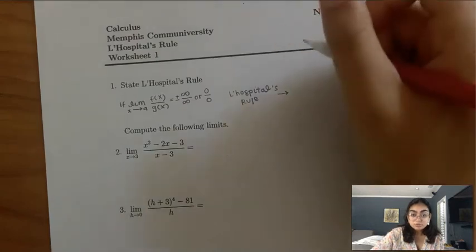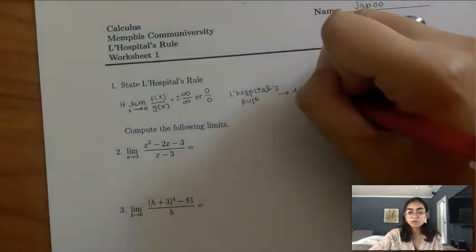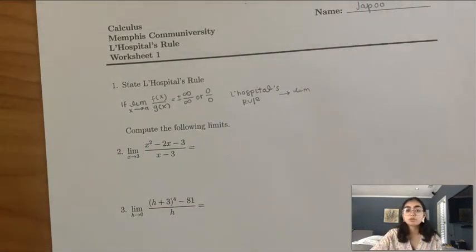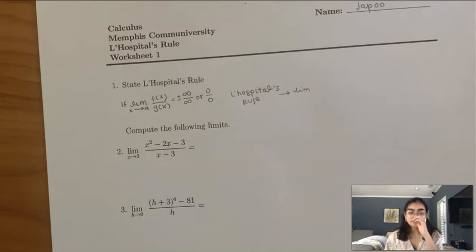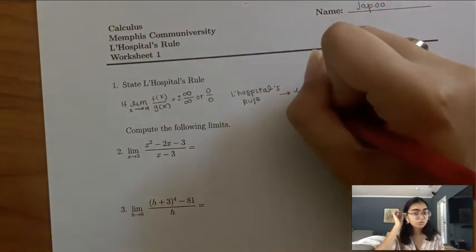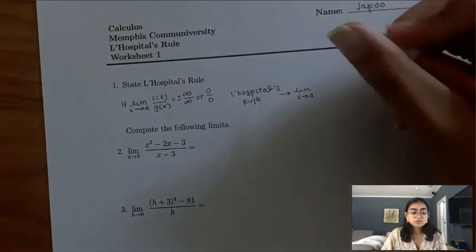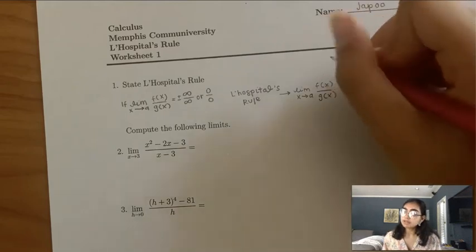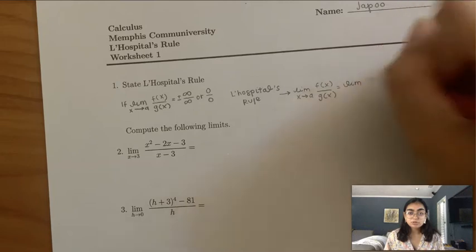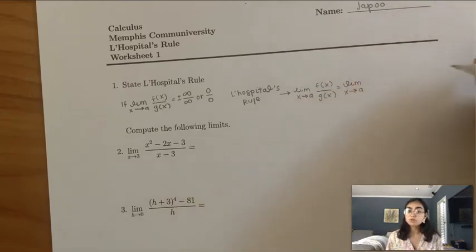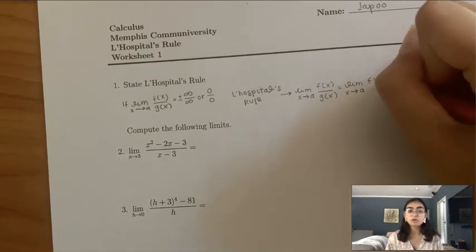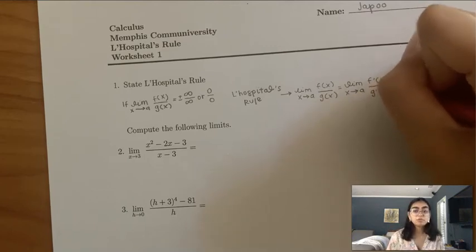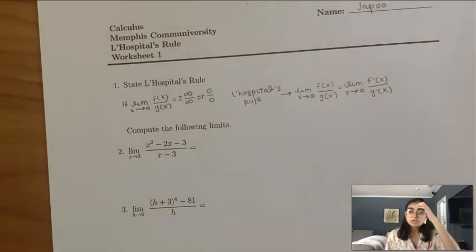To use L'Hopital's rule, I usually like to write that I'm using it — write 'L'H' — to indicate to the AP graders that you know you're using L'Hopital's rule, so they can give you points for that. To apply it, you take the derivative of the top of your limit and the derivative of the bottom, then plug in A to get your answer. Be careful not to confuse L'Hopital's rule with the quotient rule — L'Hopital's rule is for limits, quotient rule is only for derivatives.